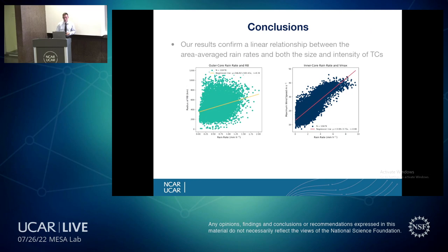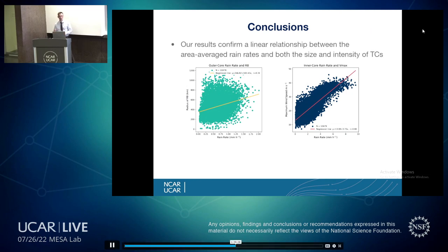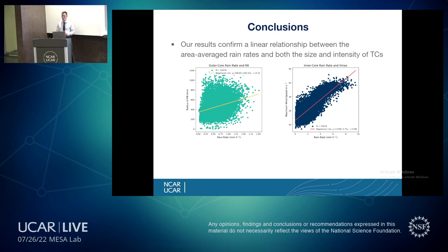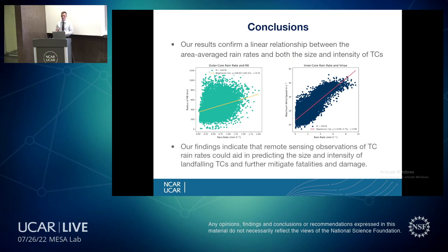Our results confirm that there is a linear relationship between area-average rain rates and both the size and intensity of tropical cyclones in these aquaplanet simulations. Our findings indicate that remote sensing observations of rain rates could aid in predicting the size and intensity of landfalling tropical cyclones and further mitigate fatalities and damage.